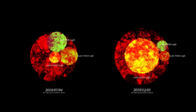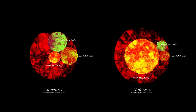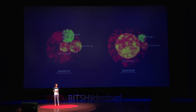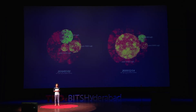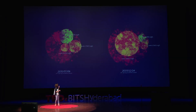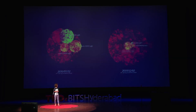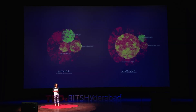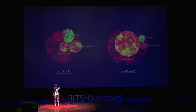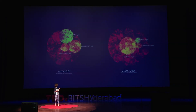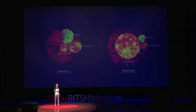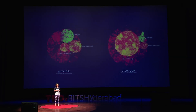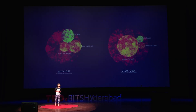These are monthly visualizations. The center circle represents data traffic, the circle above is SMS traffic, and the circle to the right is voice traffic. If you compare July and December of 2010, you can see the data usage changes dramatically.